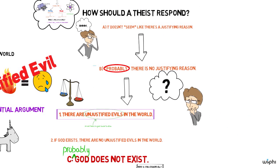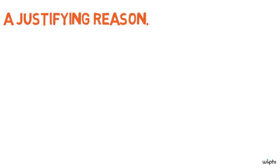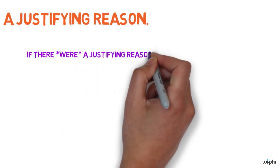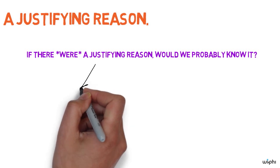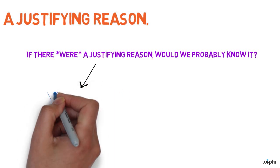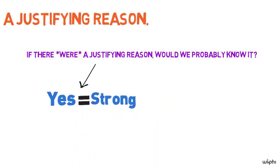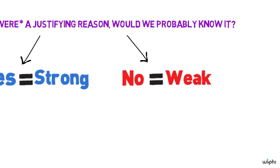Now let's go back to Rowe's argument. What is it with which he fills in the blank? A justifying reason. A reason God could have to allow this evil. So we look at a particular case of evil and we ask the question, if there were a justifying reason, would we probably know it? If the answer to that question is yes, then Rowe's argument is strong. If the answer is no, then it's weak. Let me tell you why I think it's weak.